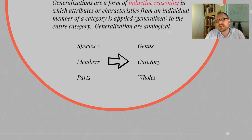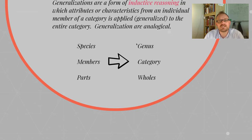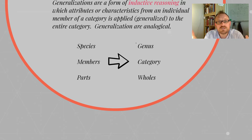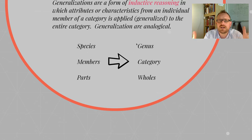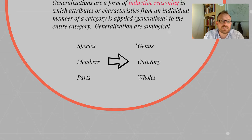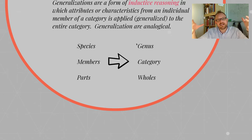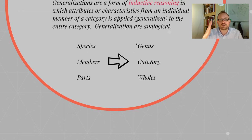In philosophy, we make a distinction between species and genus. Most of you are probably familiar with this distinction from biology or biological taxonomy. A genus is the large category, and the species are the instances or members of a larger category. So Homo sapien, for instance — sapien is a species, a member of the larger genus of Homo.